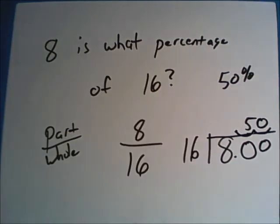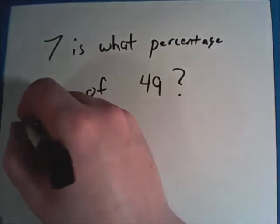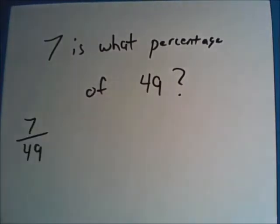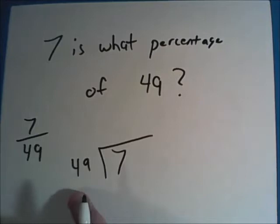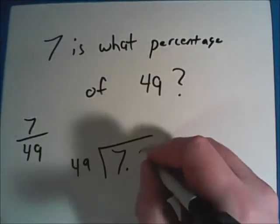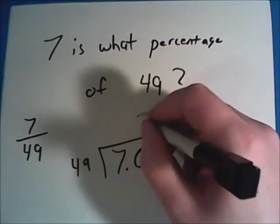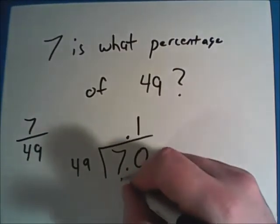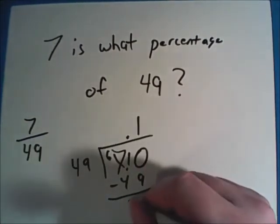Don't worry. We'll do a few more of these because they are tricky the first few times you go through them. In this one, we're asked 7 is what percentage of 49. So just like last time, set it up as a fraction first so you know where all your numbers go. We have 7 over 49, which is the same as 7 divided by 49. 49 won't go into 7 so we'll have to put a decimal point and a 0. Now 49 will go into 70 one time. 1 times 49 being 49. So that we can subtract and get 21.